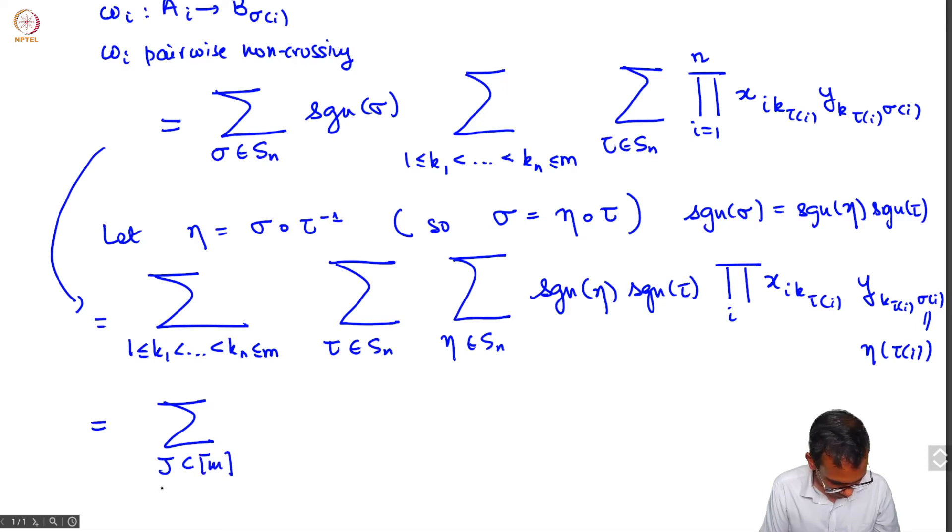Now you call this subset k1, k2, ... kn as j, sum over j in m, size of j is equal to n. And now you can break up this product into factors. These two sums can be taken independently of each other, and this product here can be re-numbered so that it's not over i but over tau i.